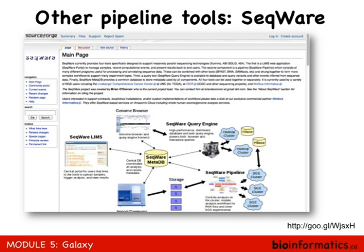Galaxy is also considered a pipeline tool. There are many pipeline tools — we've actually published one many years ago, which nobody uses anymore, though it was very useful at the time. Pipeline tools are developed to fill a gap of things that need to be reproduced in very similar ways.